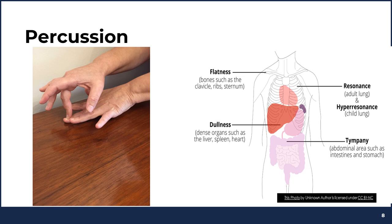Percussion is another nursing tool that can be used in the school setting if you are familiar with it. This is the method of tapping body parts to elicit sounds that determine the size, consistency, and borders of body organs, and can help assess for the presence or absence of fluid. Resonance is a low-pitched, hollow sound heard over the lungs because they are air-filled. Dullness is a quiet, short-duration thud normal over dense tissues such as the liver. Hearing dullness over the intestines would be abnormal and could represent constipation, bile obstruction, or a mass.